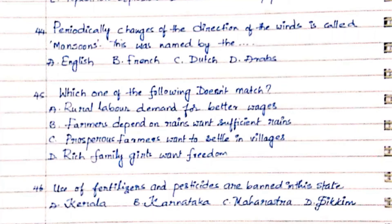Question 46: Use of fertilizers and pesticides are banned in this state. Option A. Kerala, Option B. Karnataka, Option C. Maharashtra, Option D. Sikkim.